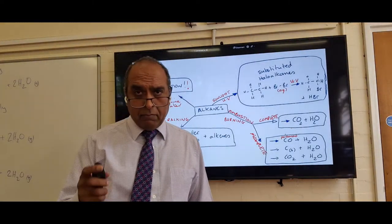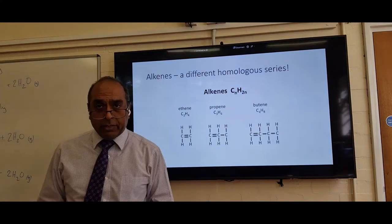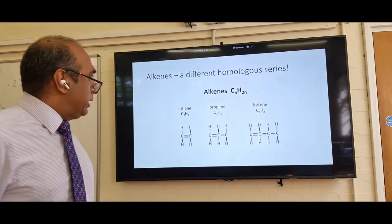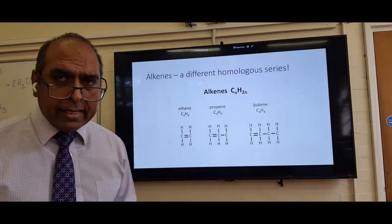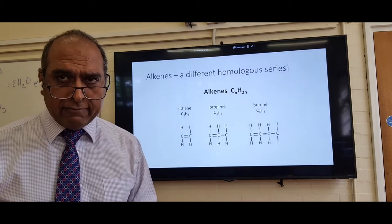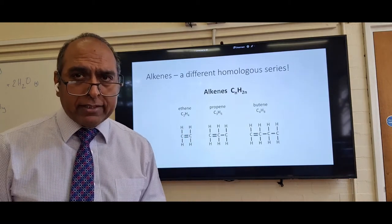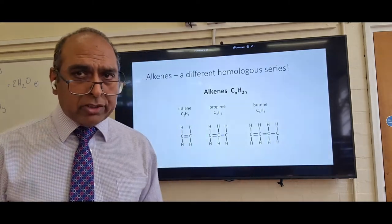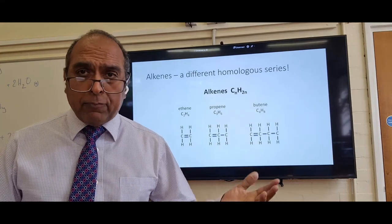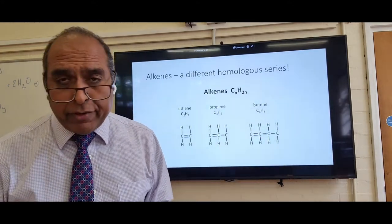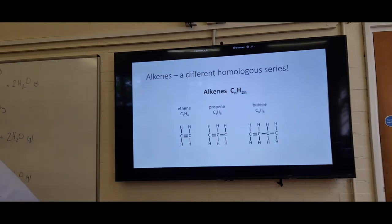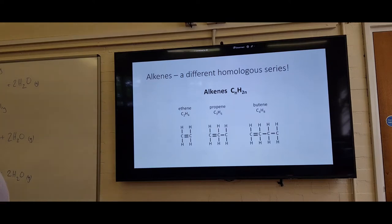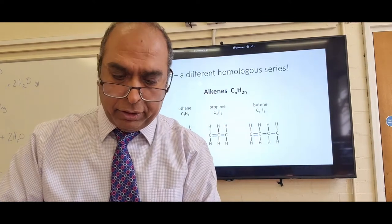Now let's move on to the next homologous series: alkenes. Alkenes have double bonds — the double bonds make these molecules very, very reactive. The double bonds are a source of reactivity. In contrast to alkanes, alkenes are very reactive. They react by addition reactions rather than substitution reactions.